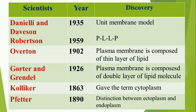Although the fluid mosaic model is widely accepted today, different scientists proposed different models for the structure of the plasma membrane. Danielli and Davson in 1935 gave the unit membrane model, slightly modified by Robertson in 1959 — describing a protein-lipid-lipid-protein structure. The story started in the 1900s when Overton said the plasma membrane is nothing but a thin layer of lipids. Then Gorter and Grendel in 1926 said it is composed of a double layer of lipid molecules. From Overton to Gorter, then Danielli-Davson, Robertson, and now the fluid mosaic model — that is the widely accepted model.